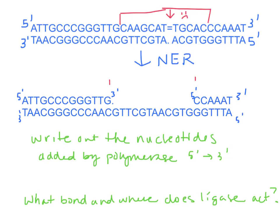And now I want you to write out the nucleotides added by polymerase in the 5' to 3' direction. So the 5' end, you need to start here, writing whichever ones are filled in. And then what bond and where does ligase act? You can circle it, put a big ligase axe here, and what kind of bond does it make?